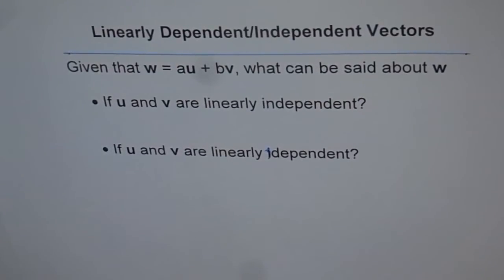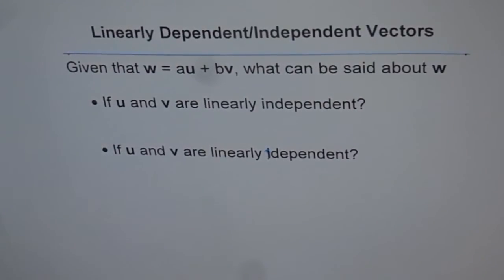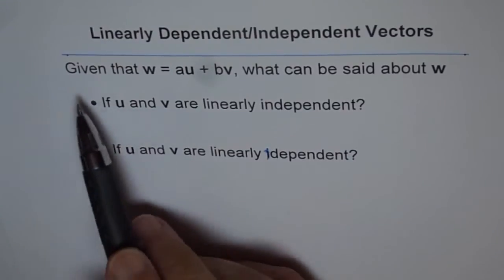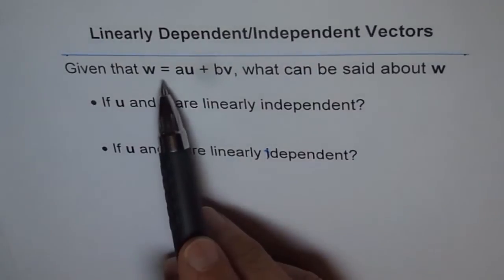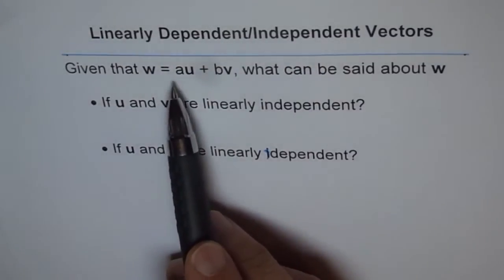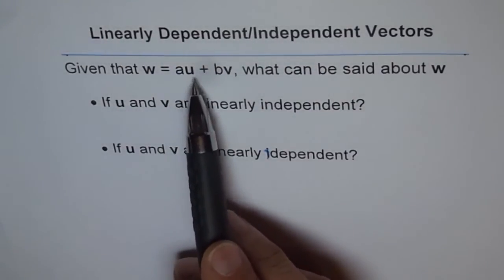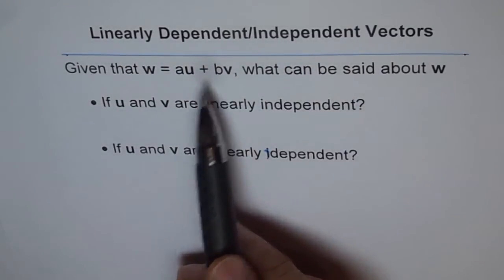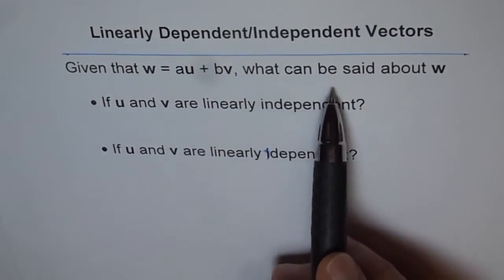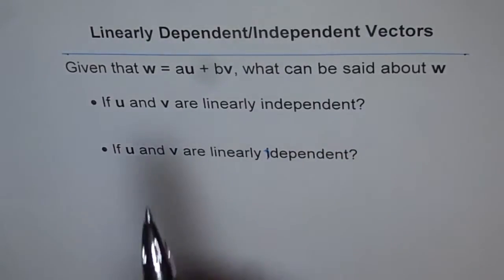Let us explore linearly dependent and independent vectors. Here is a very interesting case. Given that vector w is equal to a times u plus b times v, what can be said about w?